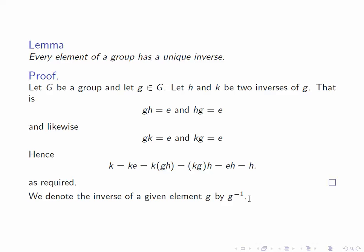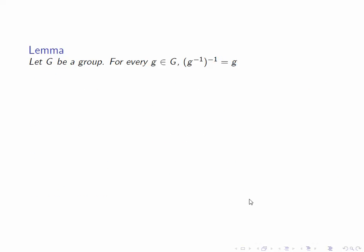Let's look at some of the elementary properties of the inverse now. First of all, the inverse of the inverse is the original element. G inverse inverse is equal to G. So from the definition of the inverse, we have that G times G inverse is equal to E, and G inverse G is equal to E.